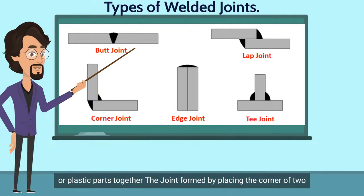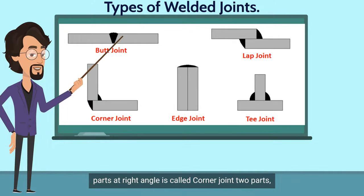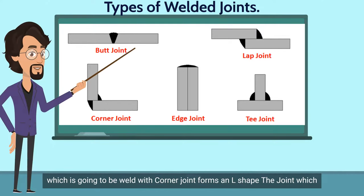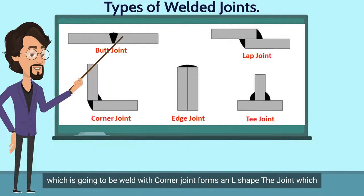The joint formed by placing the corner of two parts at a right angle is called a corner joint. The two parts which are going to be welded with a corner joint form an L-shape.